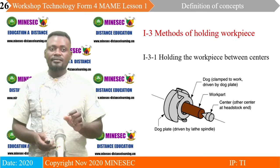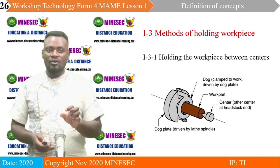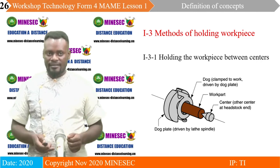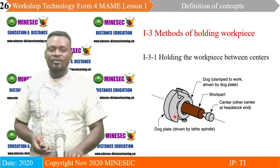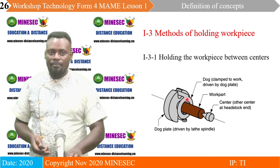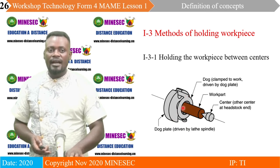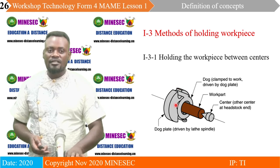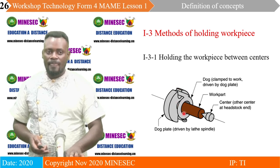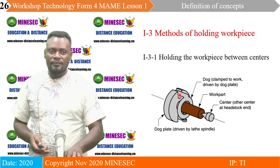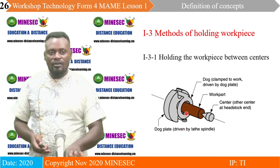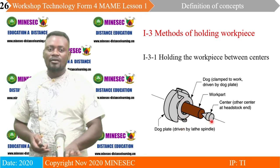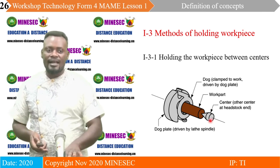For holding the workpiece between centers, we use a face plate and a dog. The dog here permits the rotation — without it, the face plate would rotate without the workpiece. With this dog attached to the face plate, it is possible to rotate the workpiece. A screw is mounted on the workpiece, and the tailstock is there to support it from losing its axis.